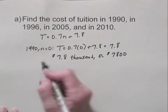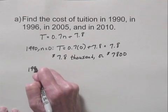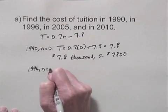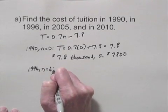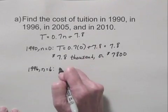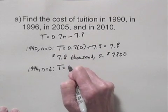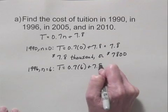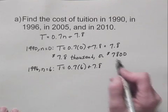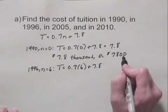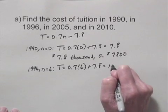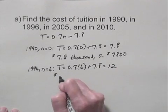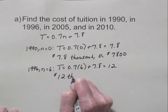In 1996, 1996 is six years after 1990, so N equals six. We substitute six for N in the equation. When we compute 0.7 times 6 plus 7.8, we get 4.2 plus 7.8, which is 12. So the tuition in 1996 was $12,000.